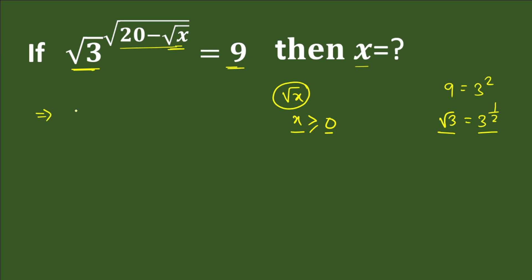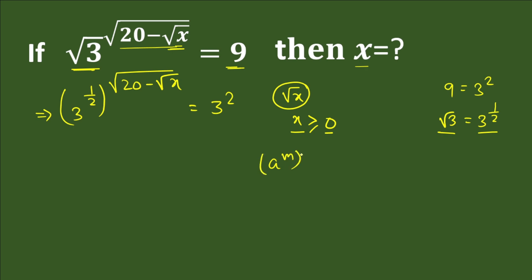We write 3 to the power 1/2, and the whole thing is raised to the power (20 minus square root x). On the right hand side, 9 is replaced with 3 squared. According to the law of indices, if we have a^m raised to the power n, that equals a^(mn) — we multiply the powers. So on the left hand side we write 3 to the power (1/2) multiplied by (20 minus square root x), equal to 3 squared.